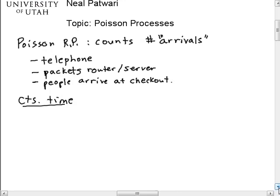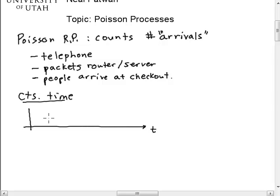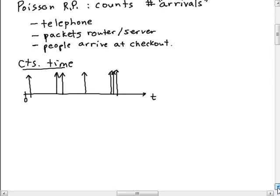For example, I might have this arrival process where this is continuous time t. I'm going to have a vertical line whenever I have an arrival. So I have an arrival right there, one right here, one right after it, maybe a little bit of time until the next one, and then three right in a row. That would be an example of an arrival process.